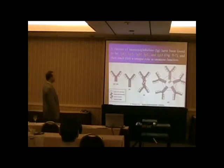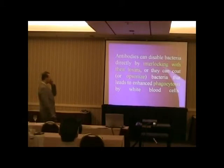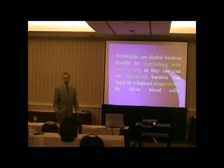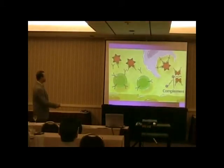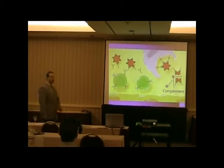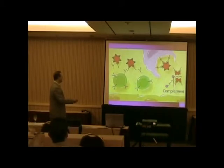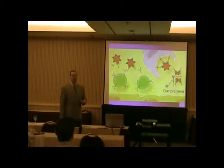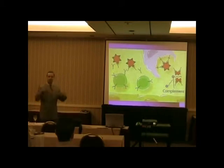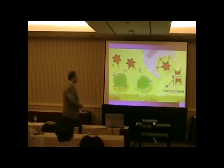There are five classes of immunoglobulins. Antibodies disable bacteria directly by interlocking with their toxins, or they can coat — also called opsonizing — bacteria, which leads to enhanced phagocytosis by white blood cells. Phagocytosis means eating them. This macrophage here is going to eat this antigen. The antibodies lock up with the antigens, and it makes them kind of tasty for the macrophage — makes it easier for this guy to want to eat them. That's called opsonizing — coating it.